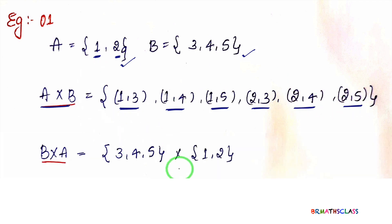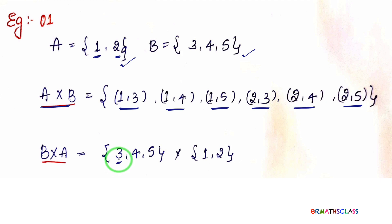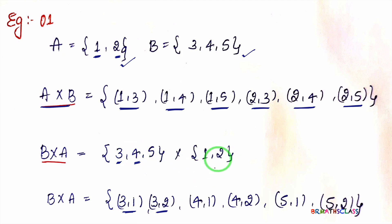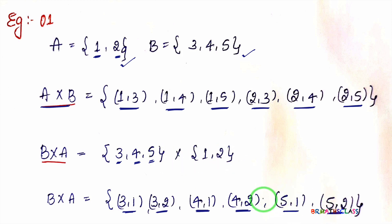To calculate B cross A, write set B as {3, 4, 5} cross set A {1, 2}. Take the first element 3 from set B and pair with all elements of set A: ordered pairs 3 comma 1, 3 comma 2. Then take element 4: ordered pairs 4 comma 1, 4 comma 2. Then take element 5: ordered pairs 5 comma 1, 5 comma 2.